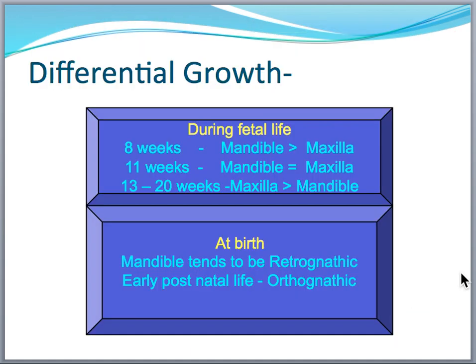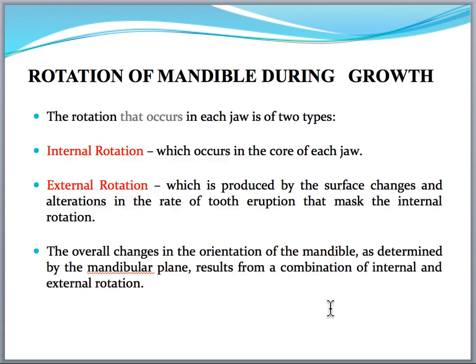This is the differential growth: at eight weeks the mandible is greater than the maxilla, but at 13 to 20 weeks the maxilla is greater than the mandible. At the time of birth the mandible tends to be retrognathic, and in early postnatal life an orthognathic mandible will be present.